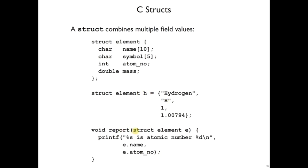Here I have a function report that takes an argument of type struct element. And it wants to print out the name and the atomic number. And it can do that by using a dot after e. So e.name means get the name field out of the element e. And that field is a character array which corresponds to a character pointer which I'm using as a string. So that will all work.